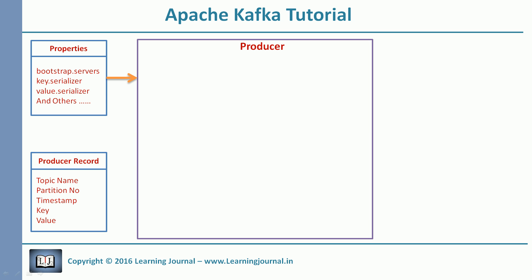We instantiate a producer object using the properties object, then we send the producer record to the producer object. When the message is handed over to the producer, the following things happen.